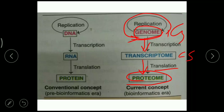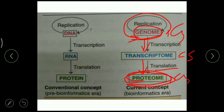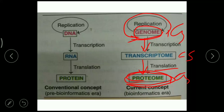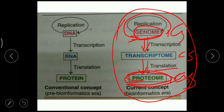The proteome represents the entire range of proteins and their biological functions in a cell — whatever proteins are present, along with their biological functions. The study of the proteome is called proteomics. This completes the current concept of the central dogma of molecular biology.